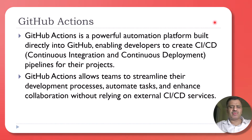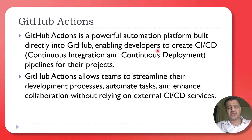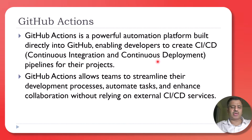GitHub Actions is a powerful automation platform which is directly built into GitHub, enabling developers to create continuous integration and continuous deployment pipelines. It helps us to streamline the development process.